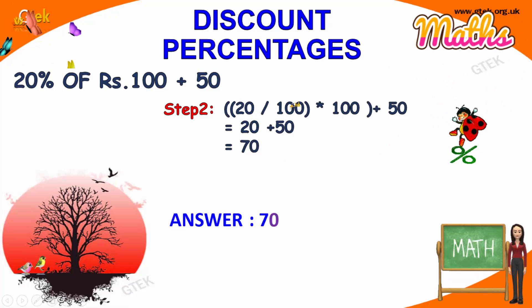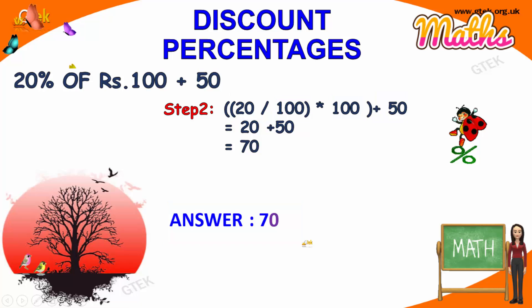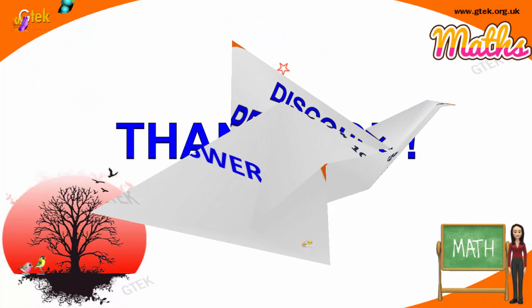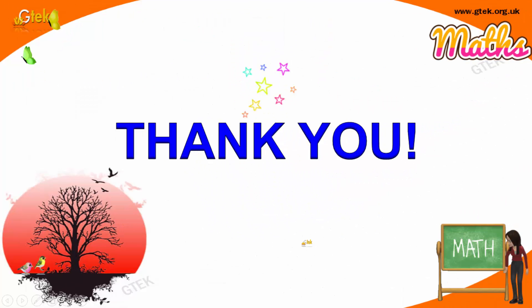This 100 and the other 100 will get cancelled. You get 20. So 20 plus 50 gives a value of 70. Thank you for watching our videos.